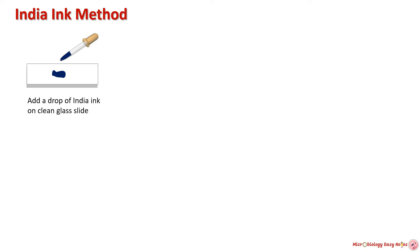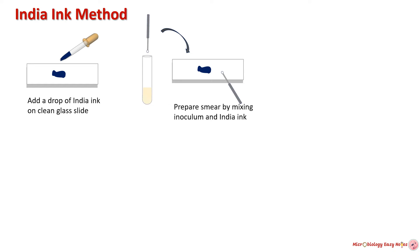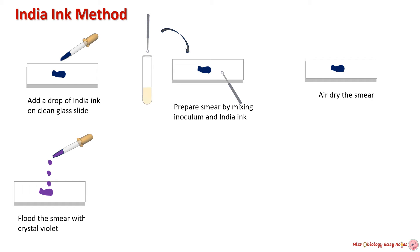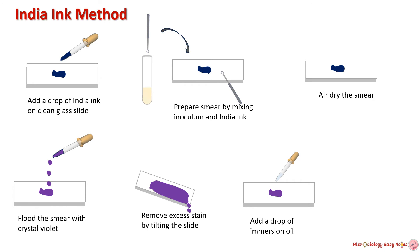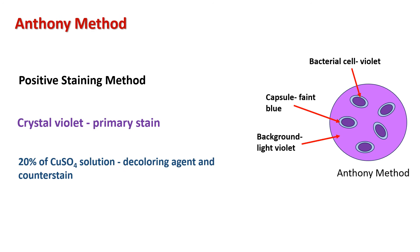Procedure of the India ink method: take a clean, sterilized or grease-free slide and add a drop of India ink to the center. Prepare a smear by taking an inoculum from the bacterial culture and mix it with the drop of India ink. Allow the smear to air dry — do not heat fix the smear. Flood the smear with crystal violet stain and leave it for 30 seconds. Remove the extra stain by tilting the glass slide, add immersion oil to the stained area, and observe under the microscope.